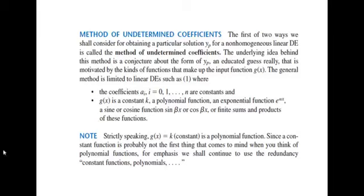The second restriction concerns g(x), the right-hand side. The method of undetermined coefficients is only applicable if g(x) is a constant function, a polynomial function — linear (ax+b), quadratic (ax²+bx+c), cubic, and so on — an exponential function, a sine function, a cosine function, or a sum or product of these. Not tangent, not secant — this method is limited to those specific function types.